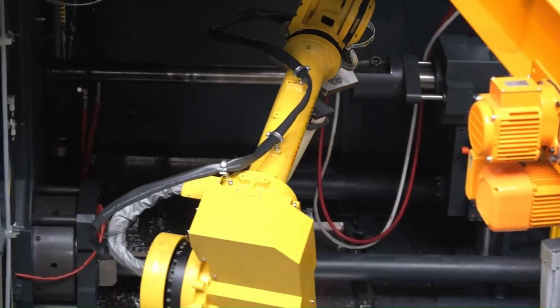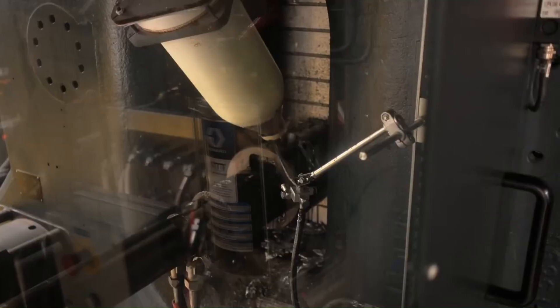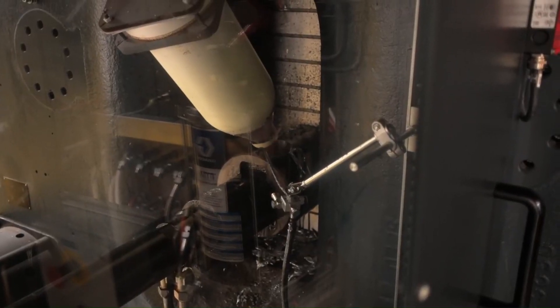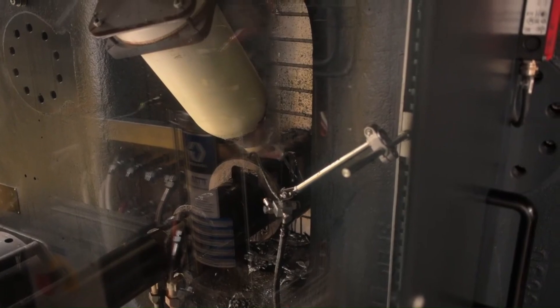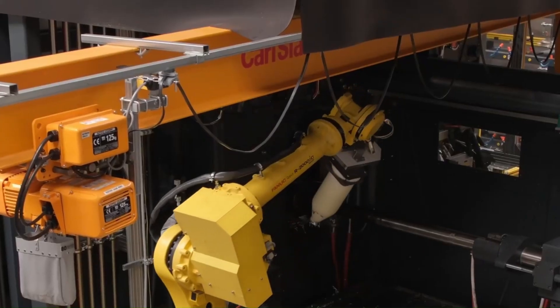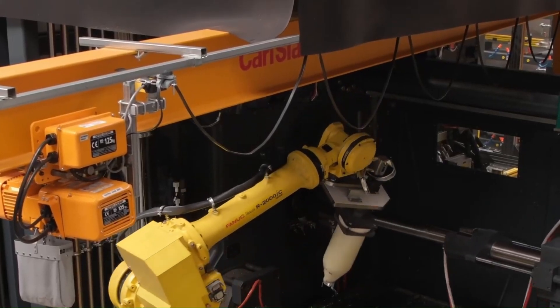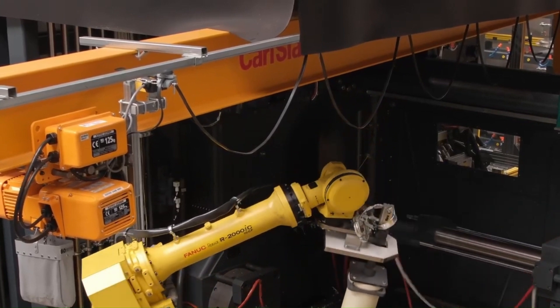Unlike the hot-chamber die-casting process, in this method, the 700 degrees Celsius hypoeutectic aluminium melt is ladled into the injection system from an external furnace. After that it is injected into the mold under high pressure.